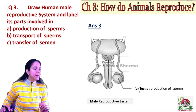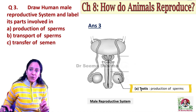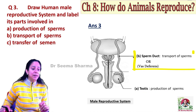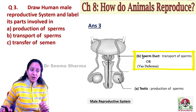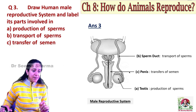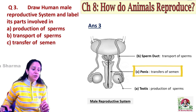Then you have to label only three parts which are asked in the question. A part — testes — they are involved in the production of sperms. B part — sperm duct — they are involved in transport of sperms. And C part — penis — it is involved in the transfer of semen. So this is how you have to attempt this kind of question.